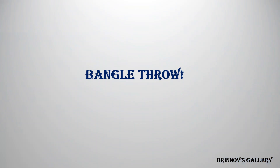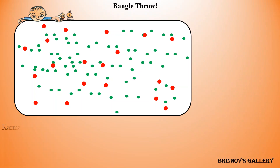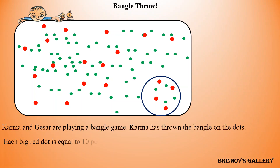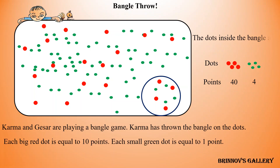Bangle throw. Karma and Gezer are playing a bangle game. Karma has thrown the bangle on the dots. Each big red dot is equal to 10 points. Each small green dot is equal to 1 point. The dots inside the bangle are counted, so Karma has got 44 points.